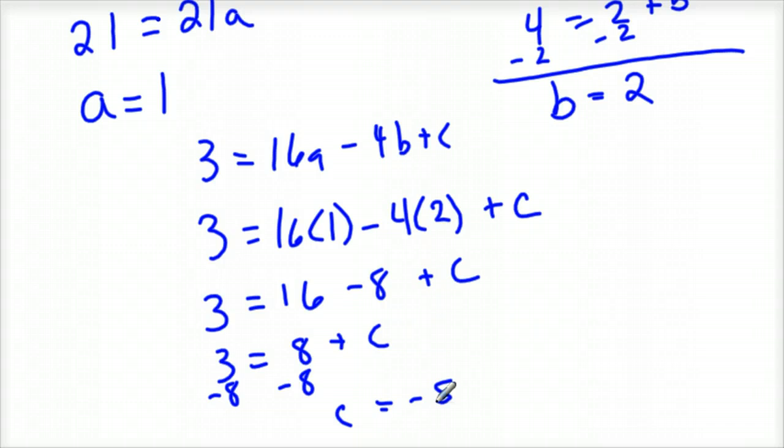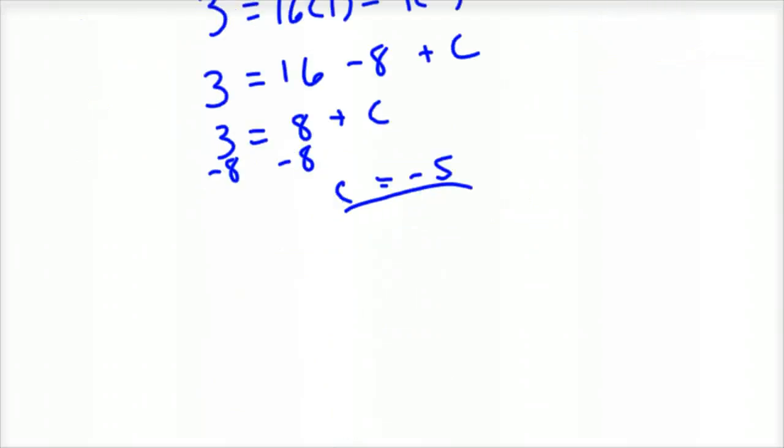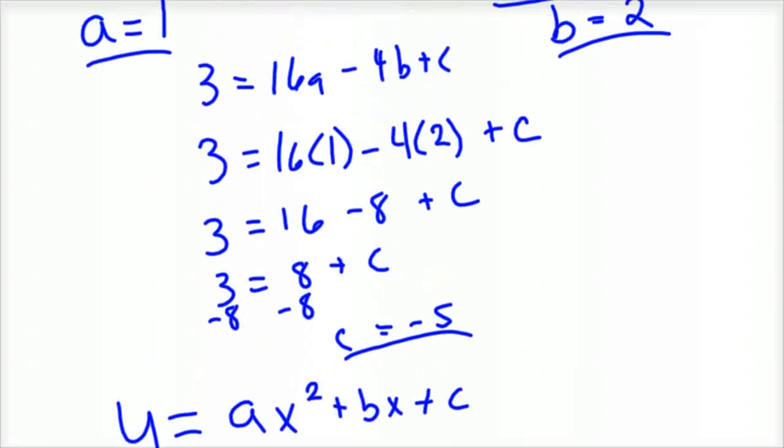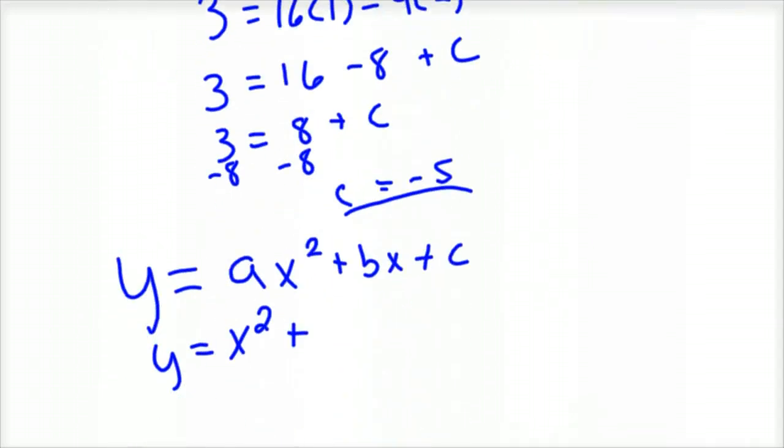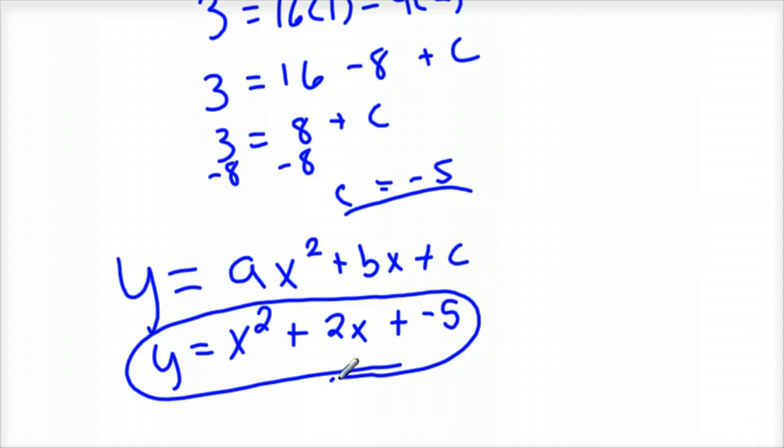And so now we have, with these three coefficients, they're called, we can fill in our equation. Our original equation is y equals ax squared plus bx plus c. We now know what that model looks like. It is y equals 1x squared plus 2, I think it was 2, yep, b was 2, 2x plus a negative 5, or minus 5, it doesn't matter. And there's your model. I hope this helps, and see you next time. Bye.